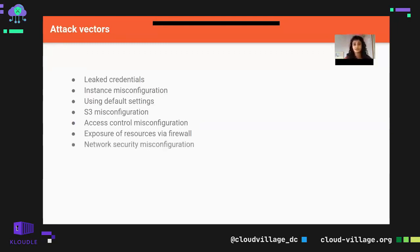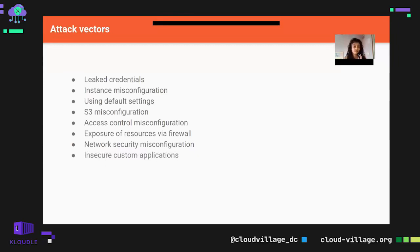Network security misconfiguration — if your VPC is not properly configured or your inbound/outbound rules are not properly configured, then anyone on the internet can access your resources. Insecure custom applications: if the web application hosted on EC2 is not properly configured or is vulnerable to SSRF or LFI, an attacker can get access to your AWS credentials.